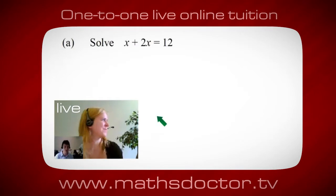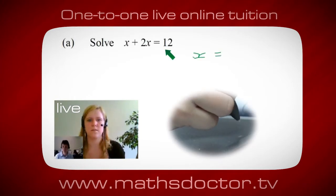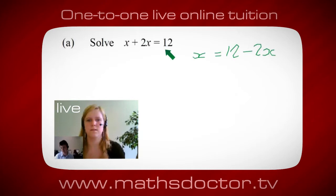Okay, so let's look at this one. So solve x + 2x = 12. So what do you think you do first? Okay, well I want x on its own, so I would put x = 12 - 2x.